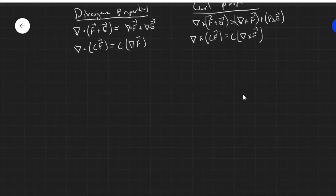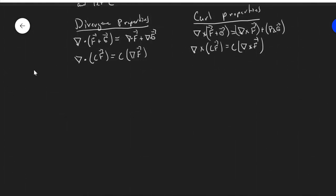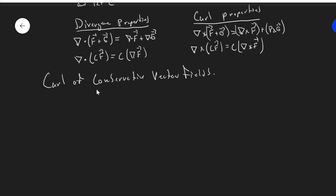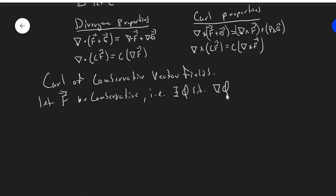We can go back to conservative vector fields and look at the curl of conservative vector fields. Let F be conservative — that is, there exists phi such that the gradient of phi, del of phi, is equal to F. Then we can compute the curl of the vector field F by going through the potential function phi.